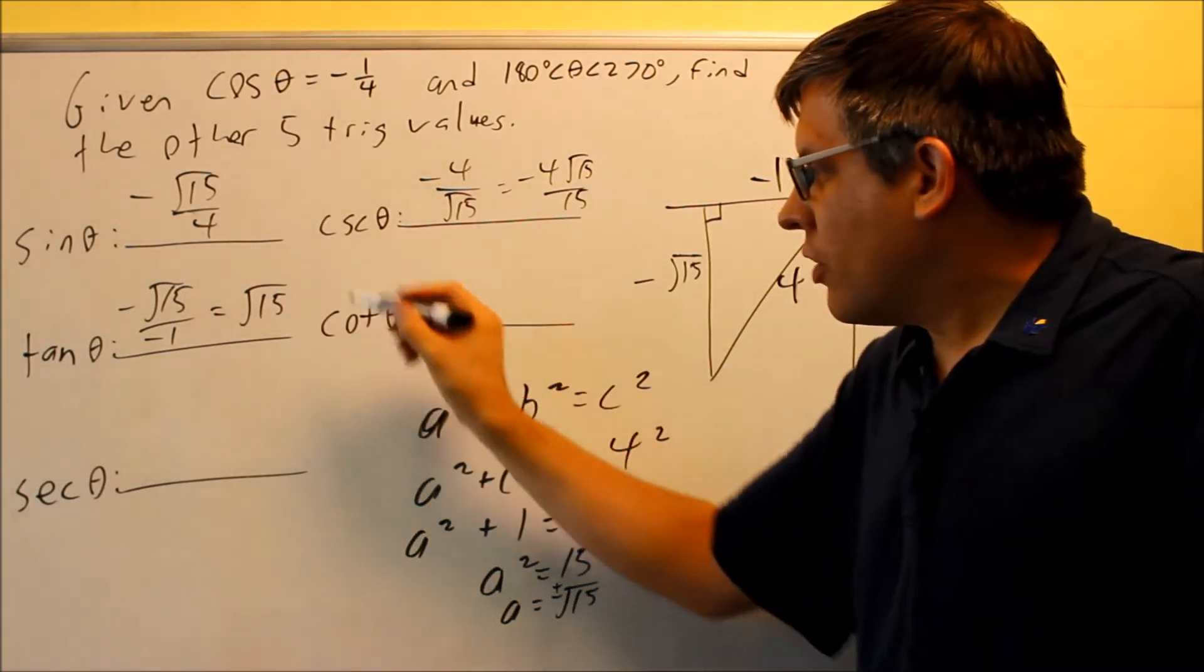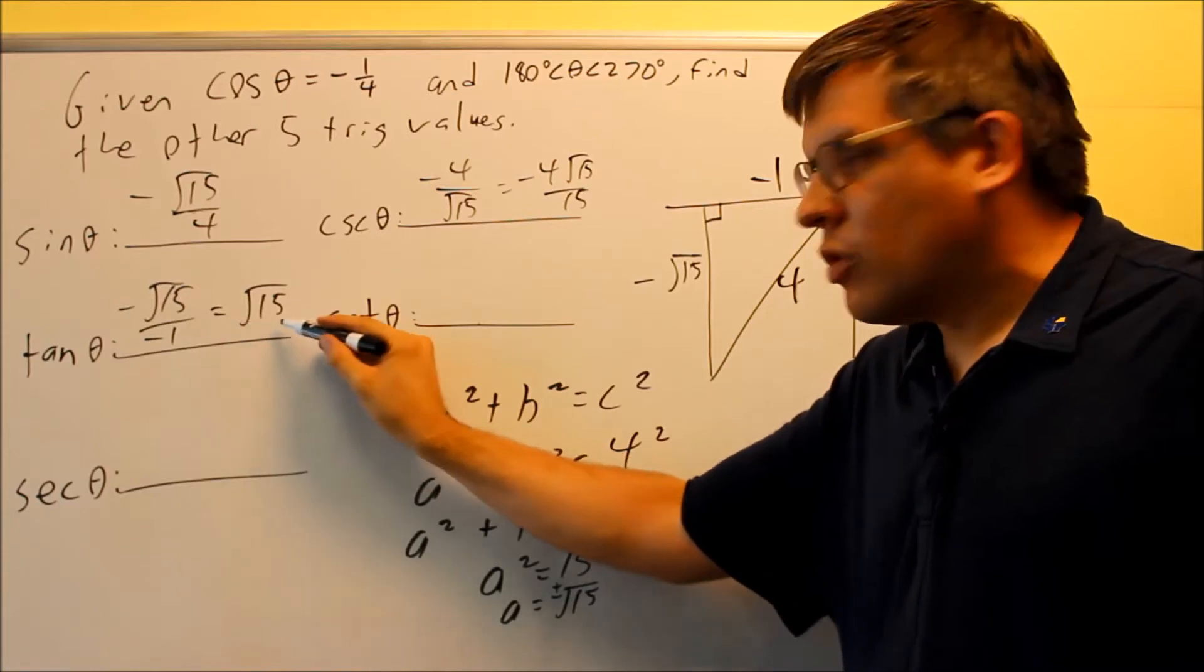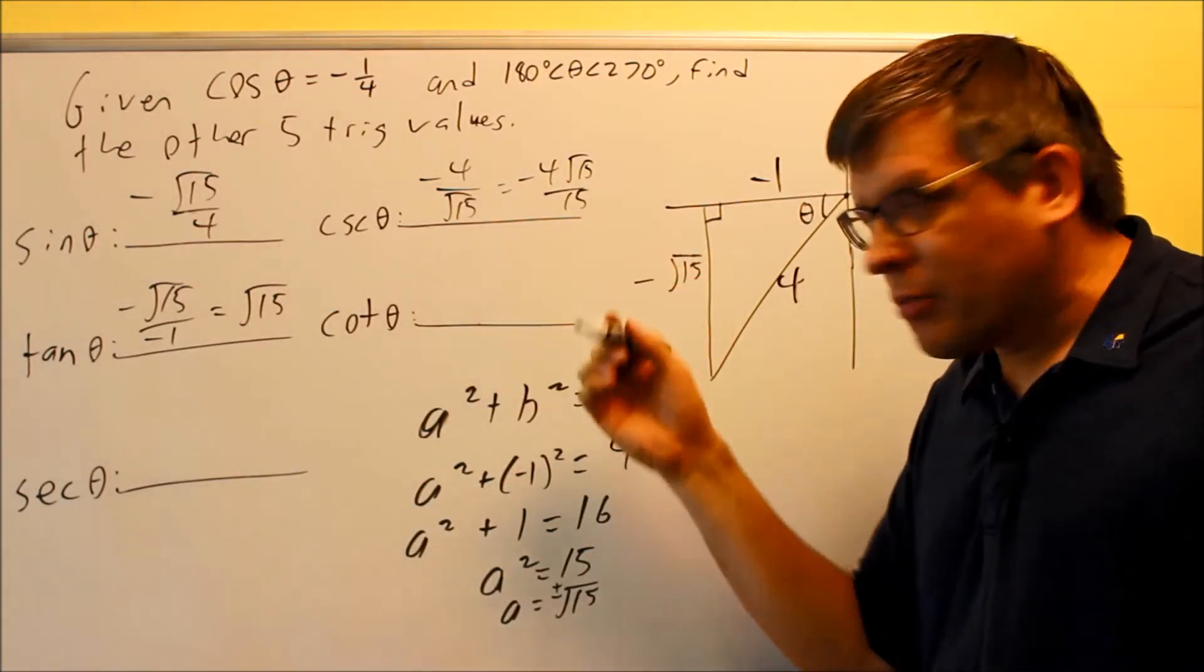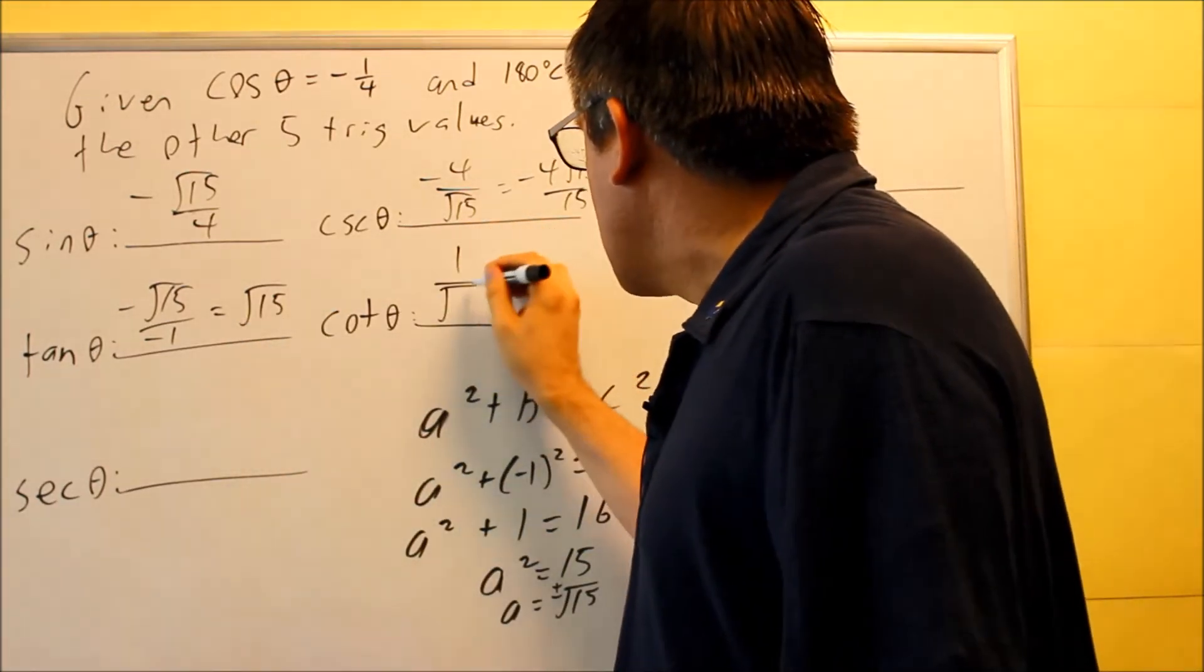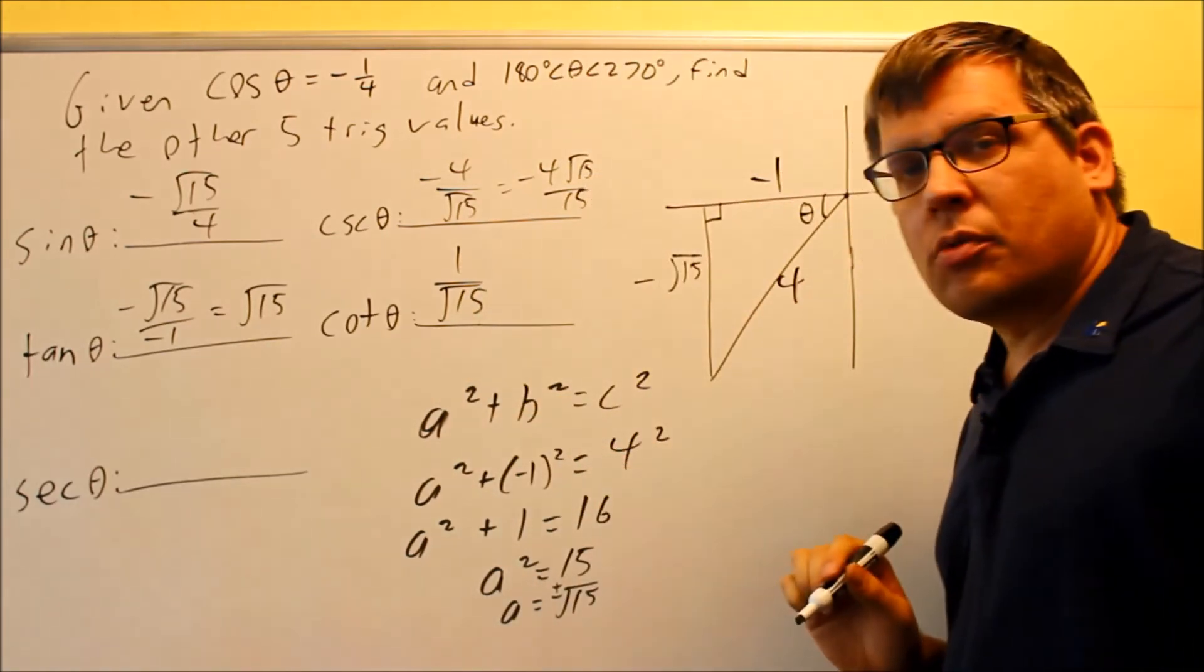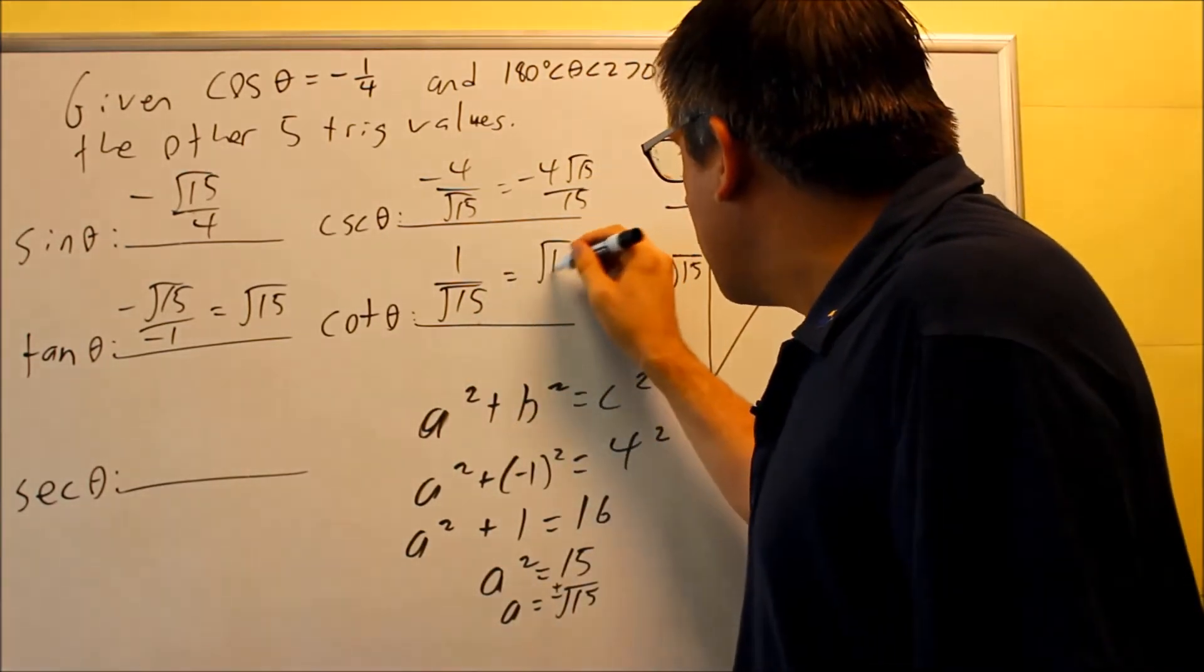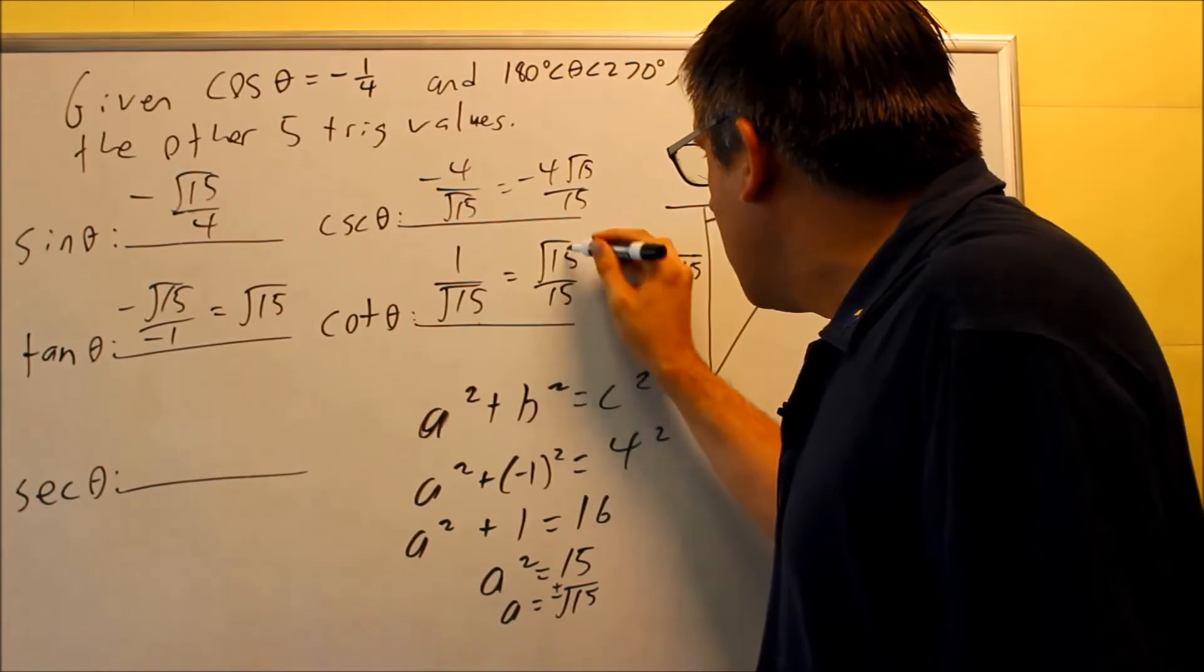I need to take the reciprocal of this, and so I can write that as root fifteen over one, so if I flip it, I get one over square root of fifteen, that would be my reciprocal. I need to rationalize it, so root fifteen over fifteen, and that's going to be my answer there for cotangent.